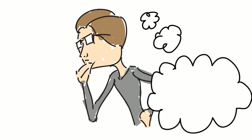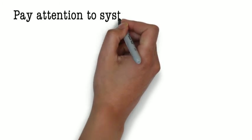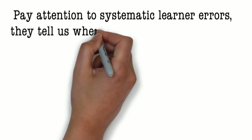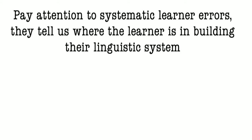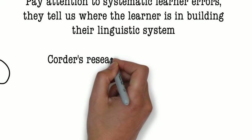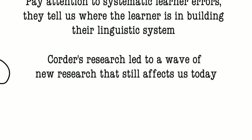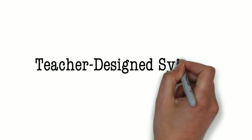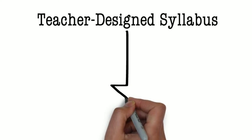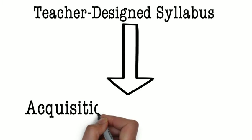Corder proposes that, rather than regard errors either as signs of bad teaching or as a nuisance, teachers and researchers pay attention to systematic errors in order to get an idea of what Corder calls the learner's built-in syllabus, that is, a natural progression in the direction of a native-like linguistic system. The idea of this built-in syllabus gave rise to a massive wave of research, still ongoing, into the sequence and stages in which learners acquire different features of a language. Corder himself doesn't describe what a built-in syllabus might look like, but he does call for a shift from a teacher-designed syllabus, which he says is generally based at best on impressionistic judgments and vaguely conceived theoretical principles, to a syllabus that takes seriously what learners have actually acquired and what they are up for acquiring next.